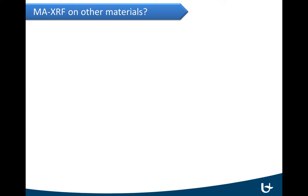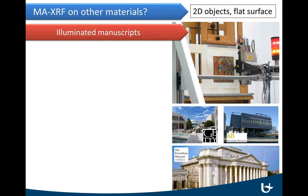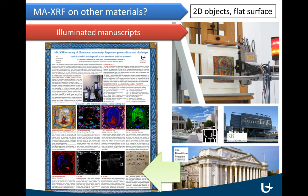There are some limitations though. As the setup was created for two-dimensional paintings, the object of interest has to present a flat surface to measure. The first thing that pops to mind are illuminated manuscripts, as these are basically paintings on a paper or parchment substrate. For that we travelled around with our scanner — we visited the Royal Library in the Netherlands, the Getty Museum in LA, and the Fitzwilliam Museum. Results on the latter campaign have been presented during the Technart Conference as well.